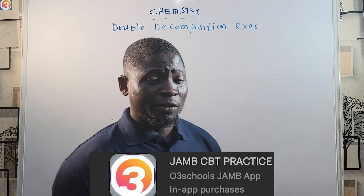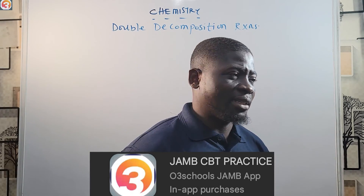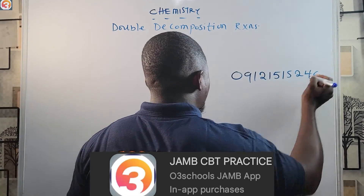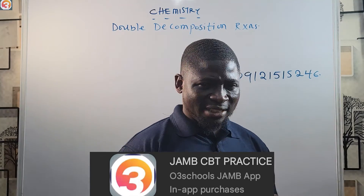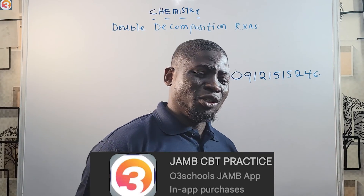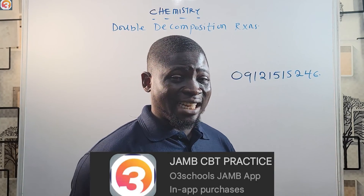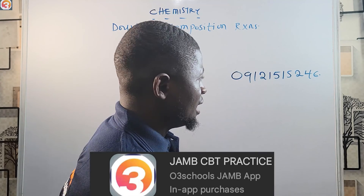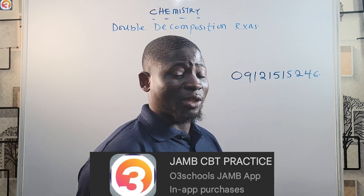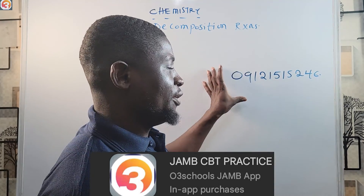The app is available for Android, PC, and iOS is in view. To download the Android version, go to the Play Store. If you want it for your computer, send a message on WhatsApp to this number: 09121515246. After making your payment — the activation fee is three thousand naira at the time of shooting this video, though it may increase — just send a message on WhatsApp to activate.